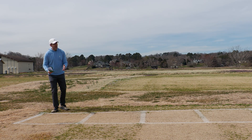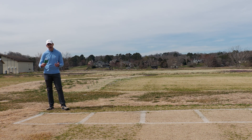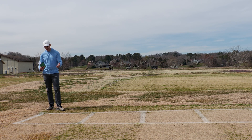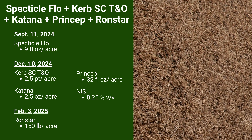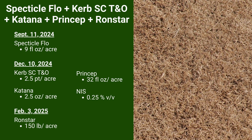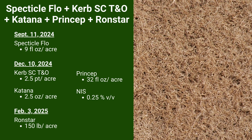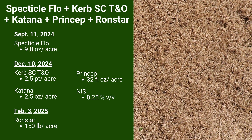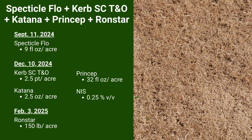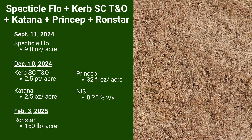The final treatment here is a standard comparison — you could call it a 'Cadillac' or 'Ritz-Carlton' program, using some of our more high-priced turfgrass herbicides. For this treatment we have an application of Spectacle Flow at 9 ounces per acre in September, then come back 90 days later with Curb, Katana, and Princep — three different modes of action in a pre/post, pre-three type mixture — and then 90 days after that in the springtime with an application of Ronstar Flow while bermudagrass is still dormant. The results are what one would expect from using those herbicides.